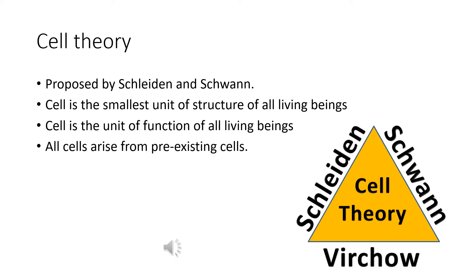We are going to discuss the cell theory, which was proposed by Schleiden and Schwann. Schleiden was a German botanist and Schwann was a German zoologist. They made similar discoveries in animals and plants. The cell theory states: cell is the smallest unit of structure in all living beings; cell is also the unit of function of all living beings; and all cells arise from pre-existing cells. This third doctrine was added by Rudolf Virchow in 1858.